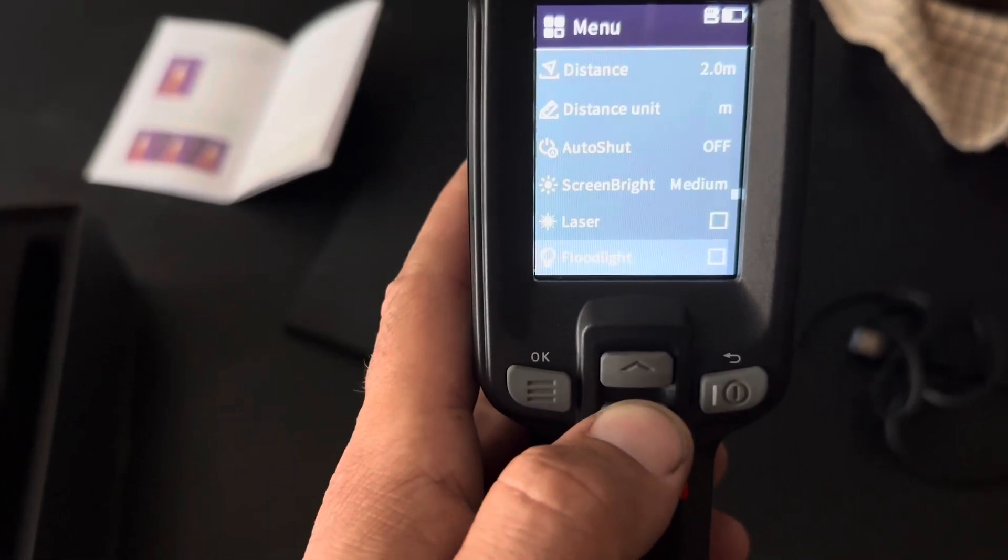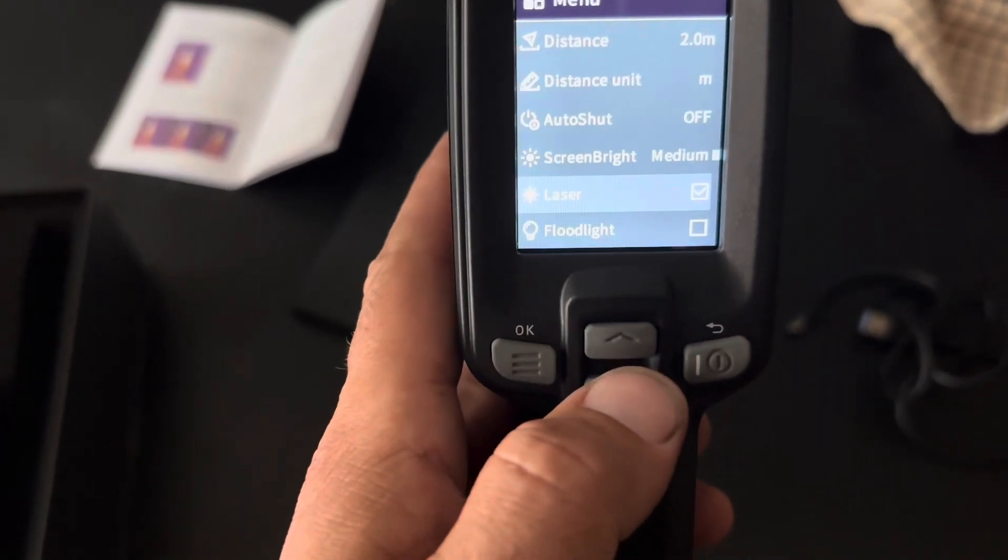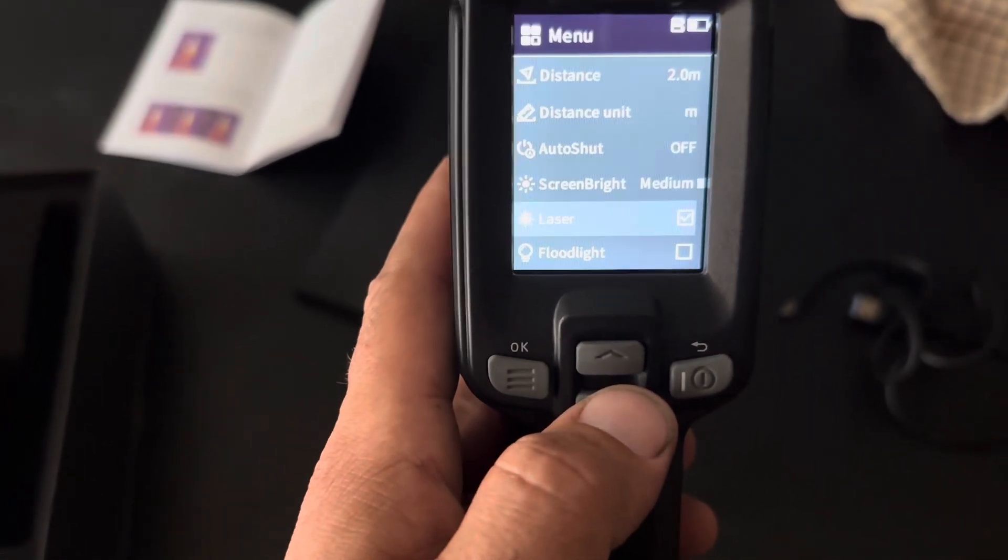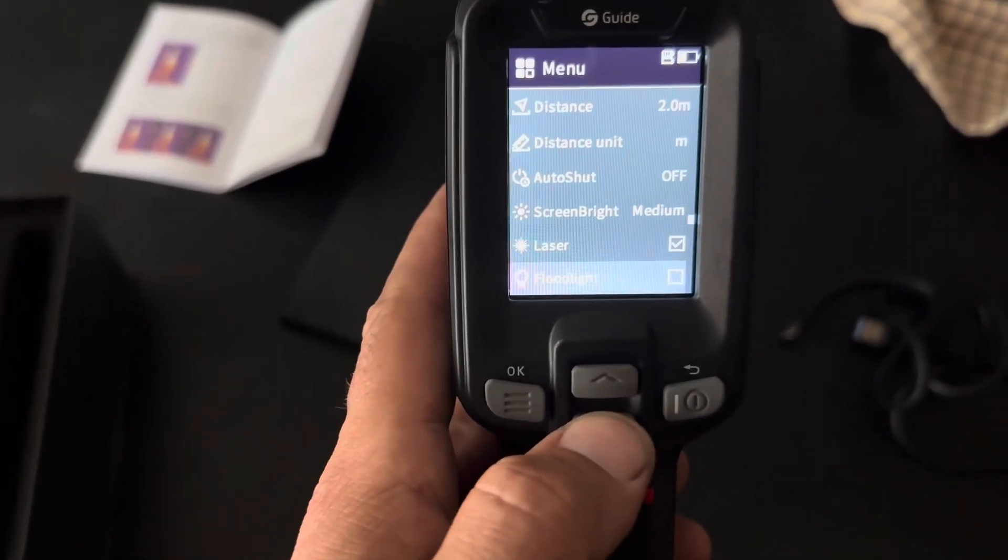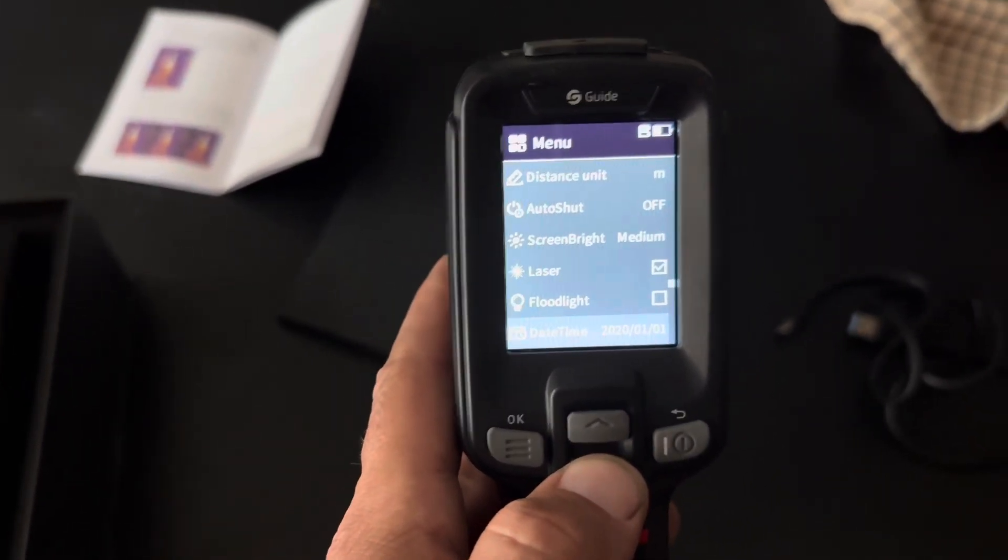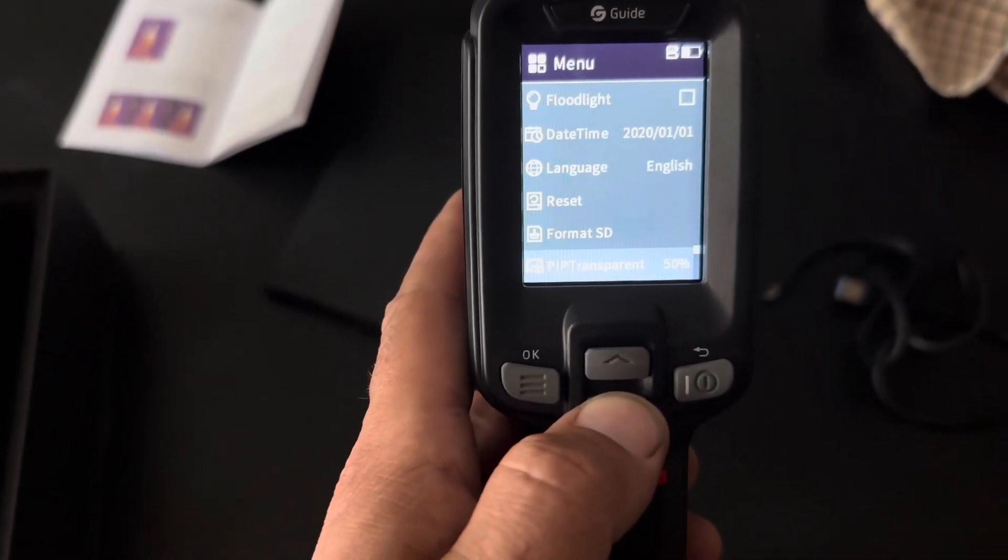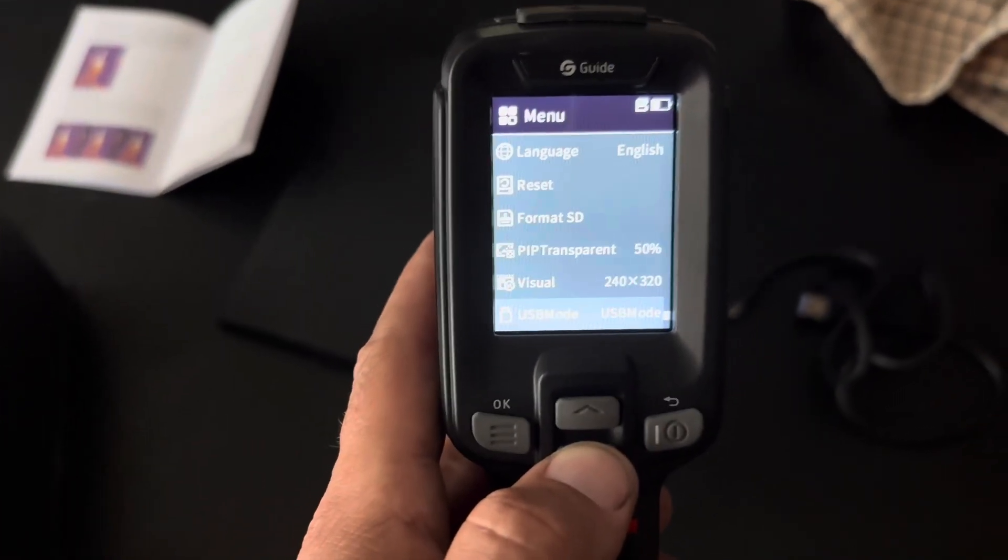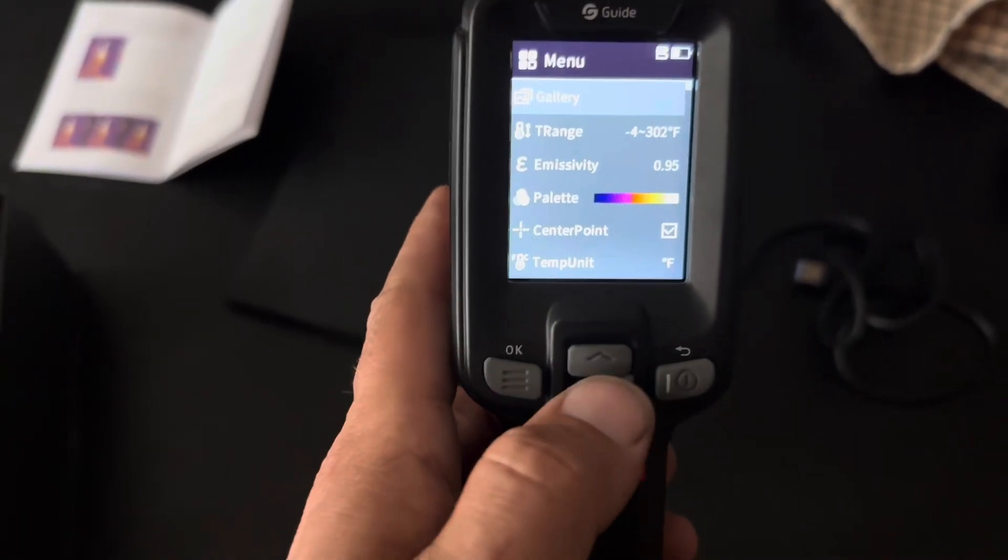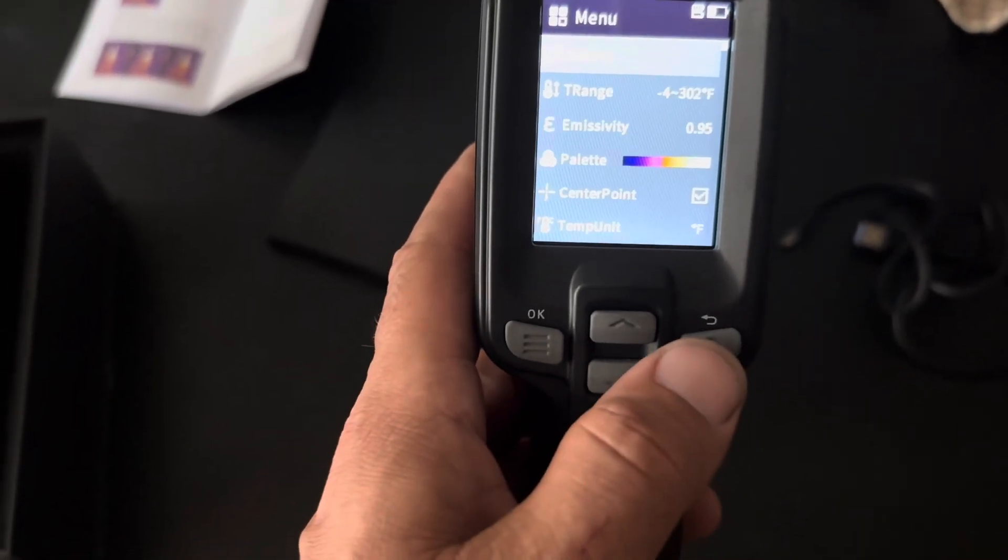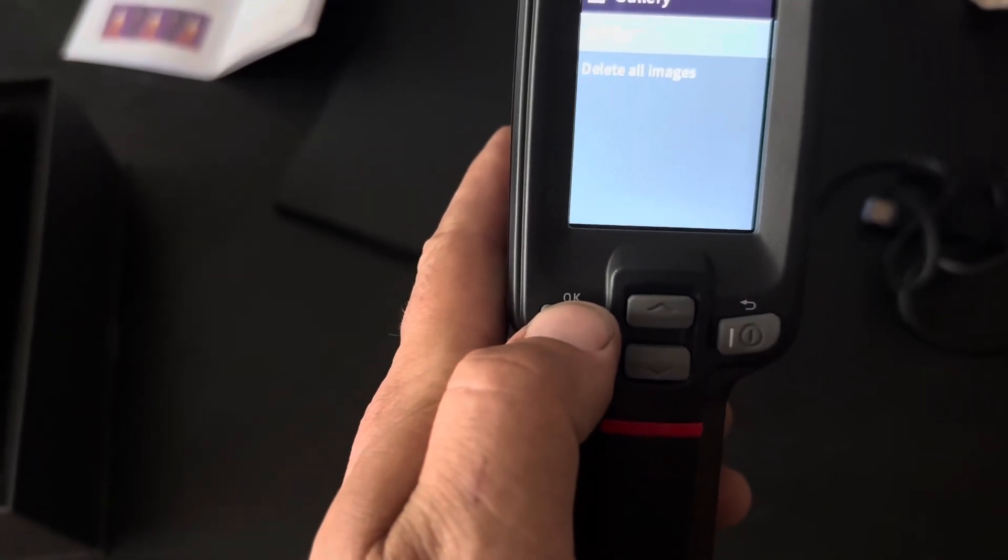You have screen brightness, auto shut off, it does have a laser feature - an infrared laser - that will detect the temperature of whatever the infrared laser hits, and you can turn that on and off. Then you have an option for a flashlight, you can change the language, format your SD card, do a factory reset on it, and we have the gallery here at the top.